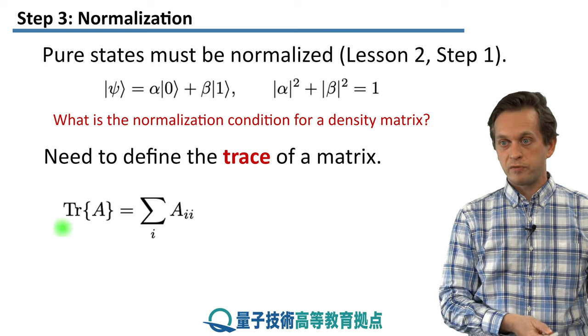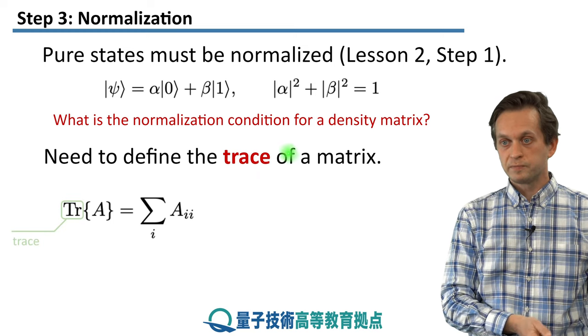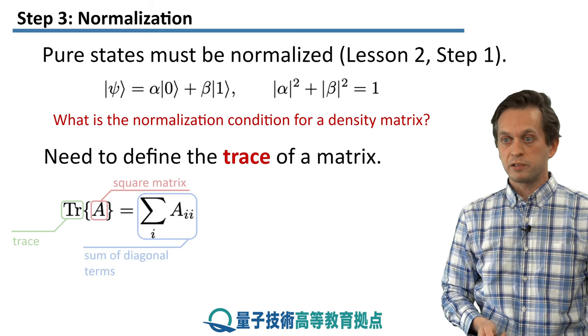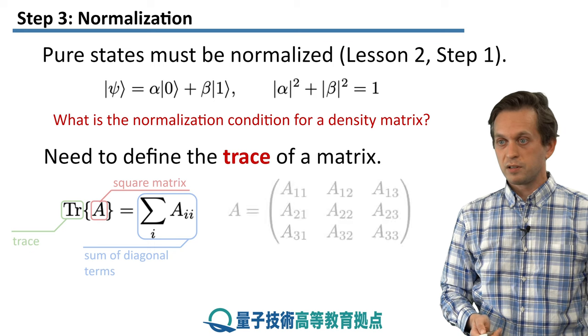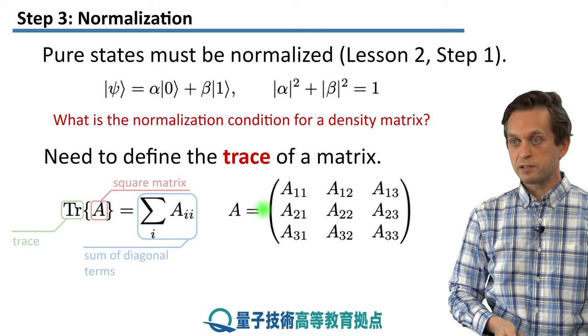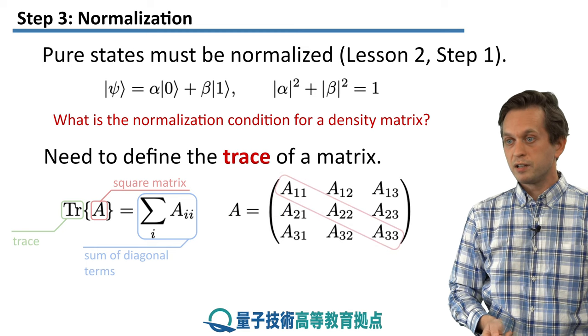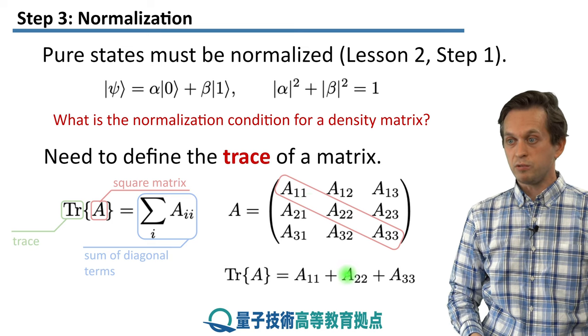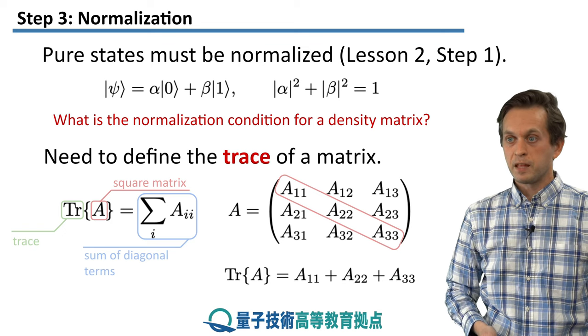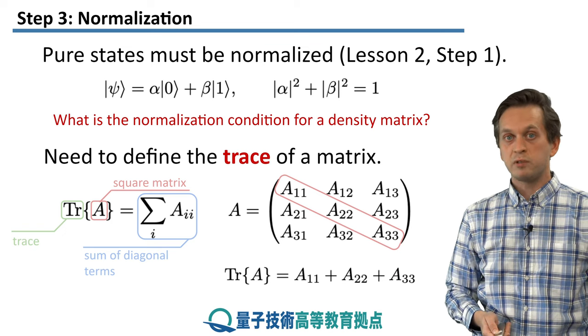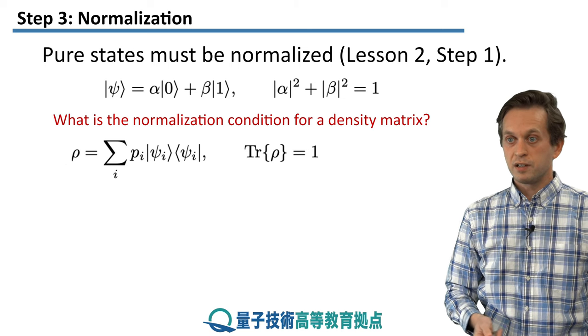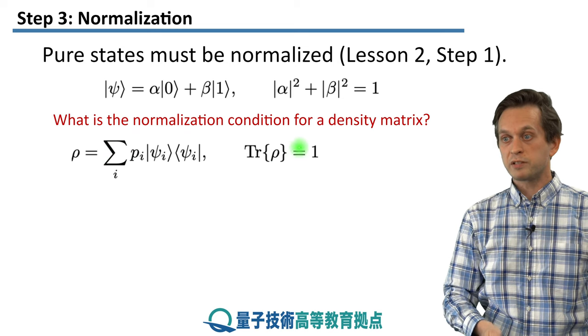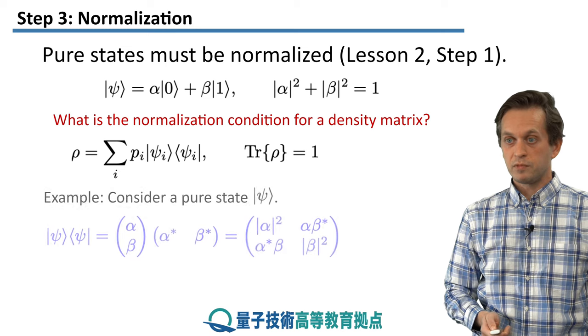We write the trace of a matrix as follows. We write it as TR of some square matrix A is just equal to the sum of the diagonal terms of that matrix. For example, if we have the following matrix A, it's a 3 by 3 matrix, then these are the diagonal terms. And therefore, the trace of this matrix is just A11 plus A22 plus A33. And with this trace, we can now define what's the normalization condition for a density matrix. Given a density matrix rho represented by this weighted sum, we get the trace of that matrix must be equal to 1.